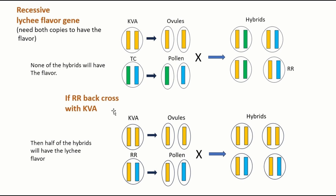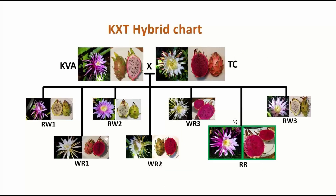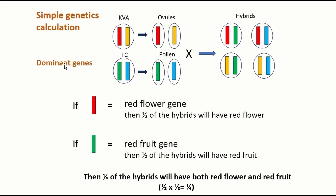What about all the other features we also like in the hybrid, such as sweet flavor, red flesh, and red flower? Those seem to be dominant genes — they are not recessive because you can see some of them are readily expressed in their offspring. Here is a diagram for dominant gene segregation. If the red bar represents the red flower gene from KVA, after going through this process, you can see half of the hybrids will have the red flower. Similarly, if you use a blue bar as the red fruit flesh gene from Trisha, after this process also half of the hybrids will have red fruit flesh.